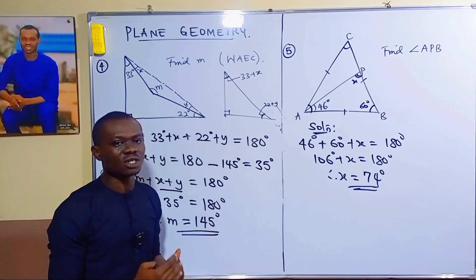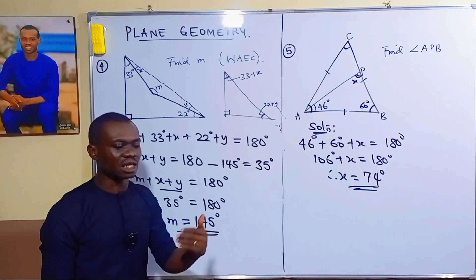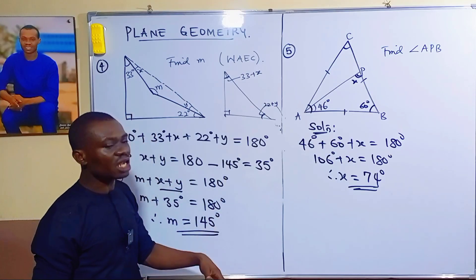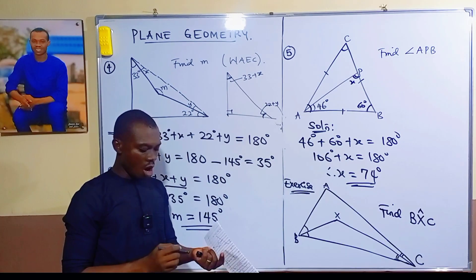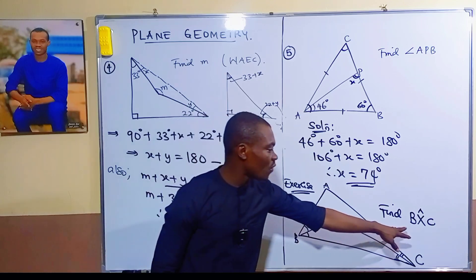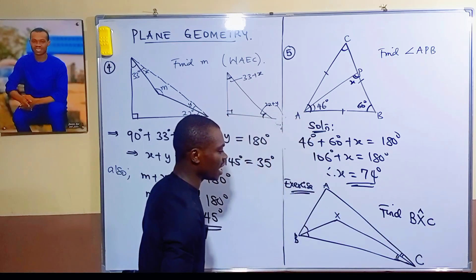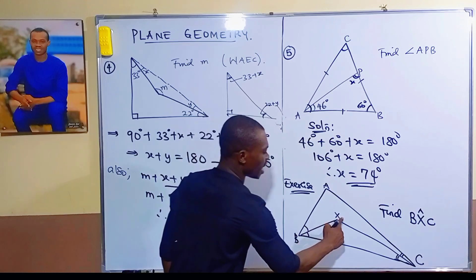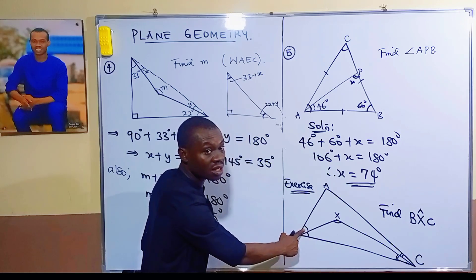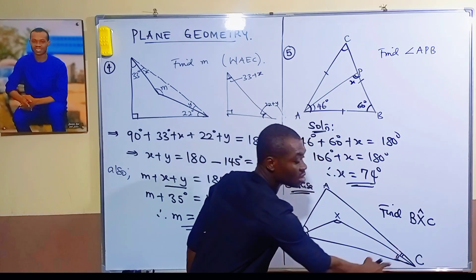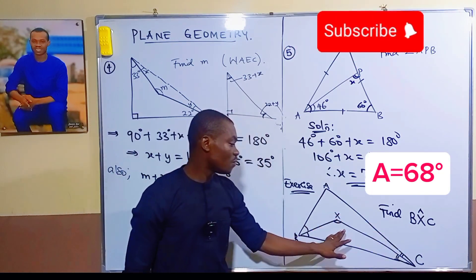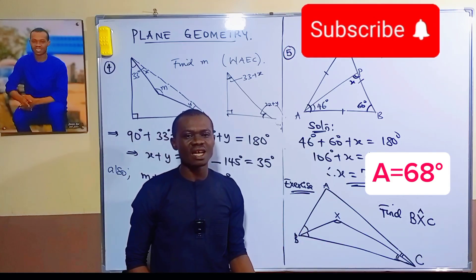That covers the concept of geometry on triangles for this lesson. In the next video we will look at polygons and then angles formed on parallel lines. Here is the exercise: find the value of angle BXC. The equal-angle signs in the diagram indicate which angles are equal to each other. Post your solution in the comment section. See you in the next video.